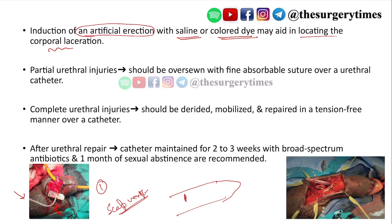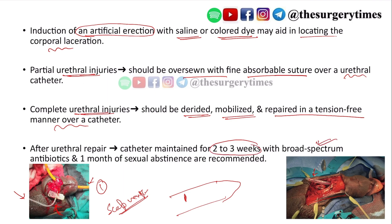For partial urethral injury, it should be oversewn with fine absorbable suture over a urethral catheter. For complete urethral injury, it should be debrided, mobilized, and repaired in a tension-free manner over a catheter. After urethral repair, the catheter is left in place for two to three weeks, with broad-spectrum antibiotics and one month of sexual abstinence.